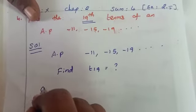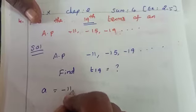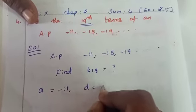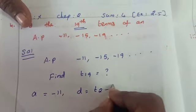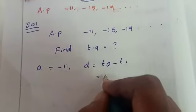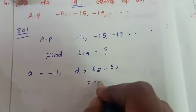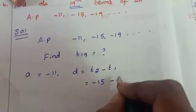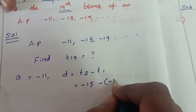Now, take and write a. A, first term is -11. D, D formula is T2 minus T1. Apply T2, T2 is second term, -15, minus first term is -11.